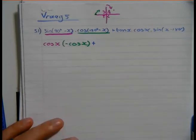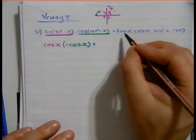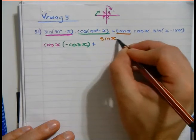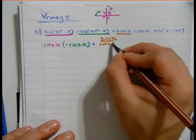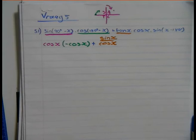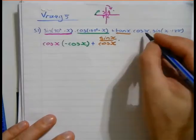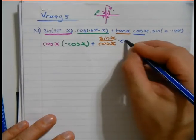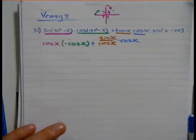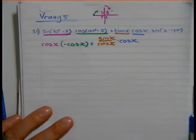Tangent, I can change tan to sin over cos. Multiply, sorry for that. Multiply by cos(x). Multiply by, okay I'm going to write it at the top.